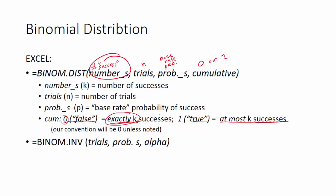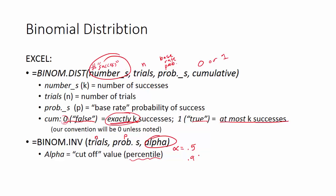We'll also use BINOM.INV in a few instances. This works the same way as NORM.INV for normal distributions. Instead of finding the probability of a certain outcome, we have a percentile and want to find the value of the distribution at that percentile. The arguments are: number of trials (n), probability_s (base-rate p), and alpha (the percentile — e.g., 0.5 for the 50th, 0.95 for the 95th).